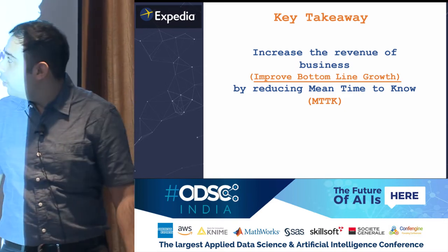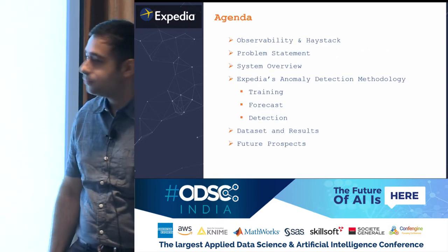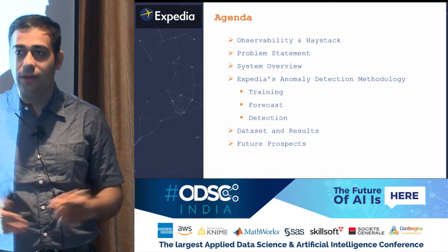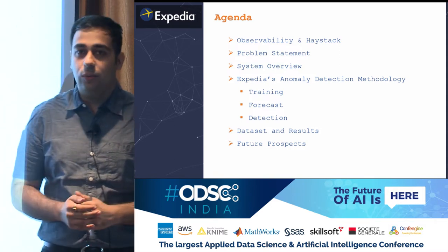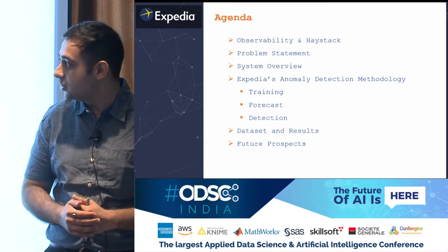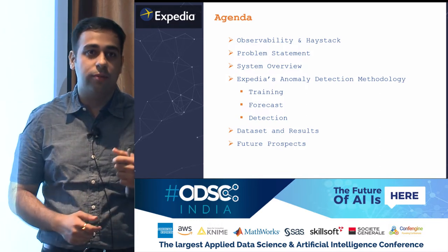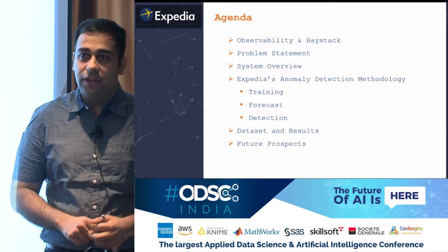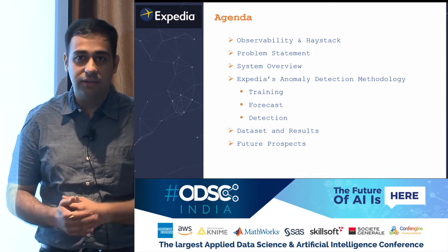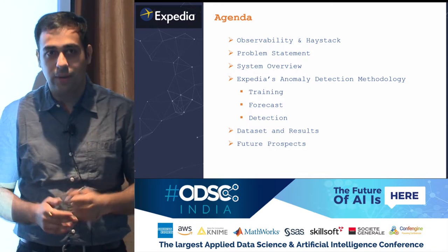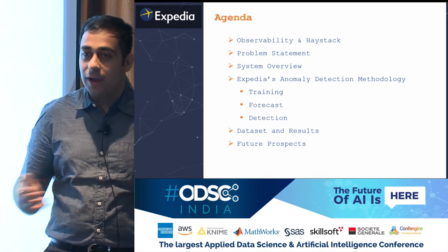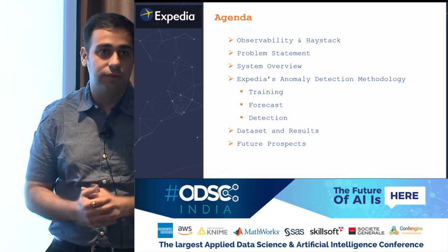Let's start with the agenda of the talk. We will first go over what observability and Haystack are, and how they led to our problem statement. We will then see the system architecture of the anomaly detection system and how the algorithm works. We will look at the datasets and results, and finally wrap up with the future prospects of the algorithm.